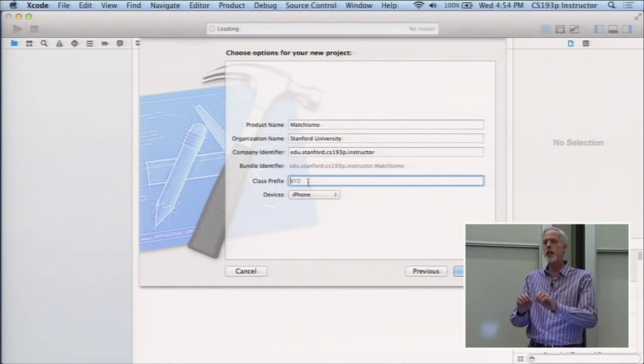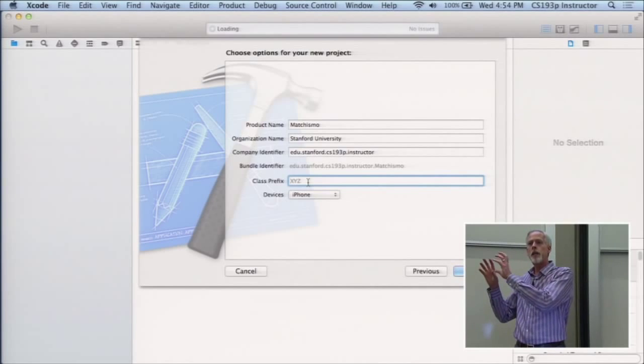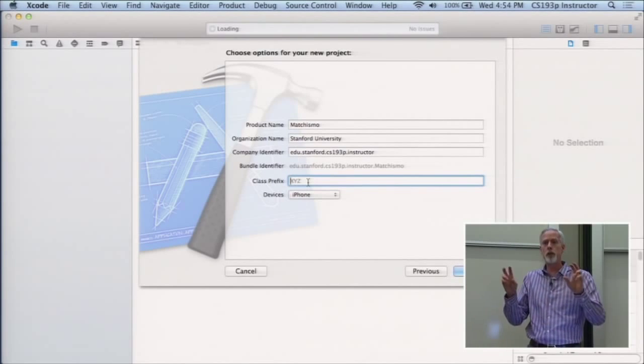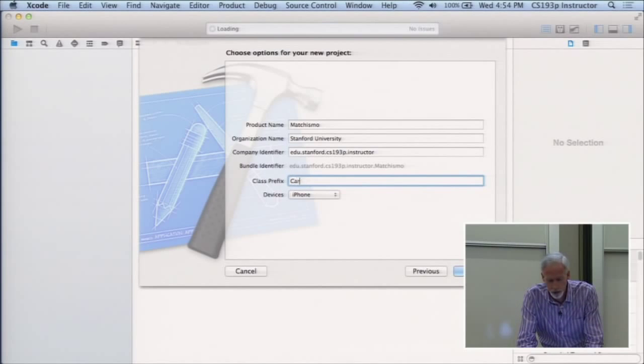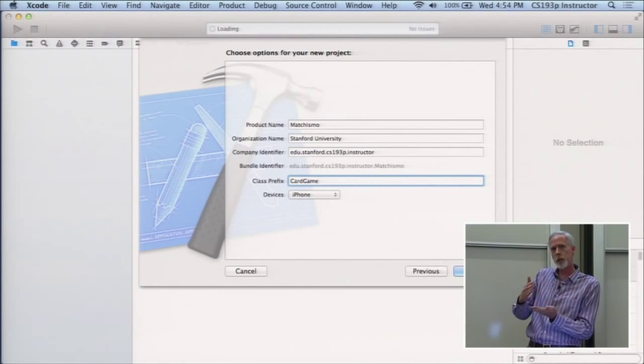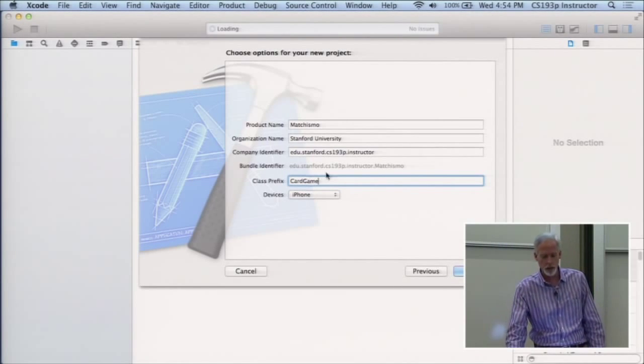And then this class prefix, this template is going to create a view and a controller for us. And this is saying what do you want the name of your controller class to be? By default it's going to be called view controller. But if you type something here like card game, now it's going to be called card game view controller, which is a little better name for us. So that's just the prefix it's going to put on the name of your controller that it creates for you.